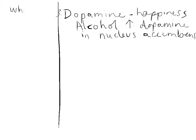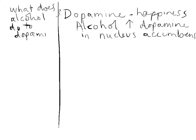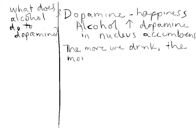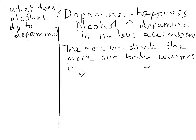Over the course of chronic exposure, dopamine function starts to adapt and counter the stimulation supplied by the alcohol — the drinker has to drink more to feel the same effects. This is explained by something called the Opponent Process Theory. You need to know this name: Solomon. Associate Solomon with the Opponent Process Theory.